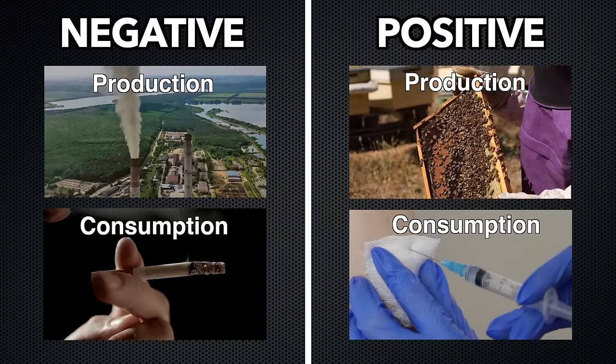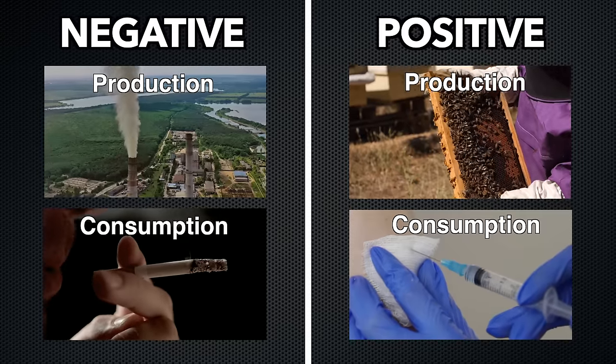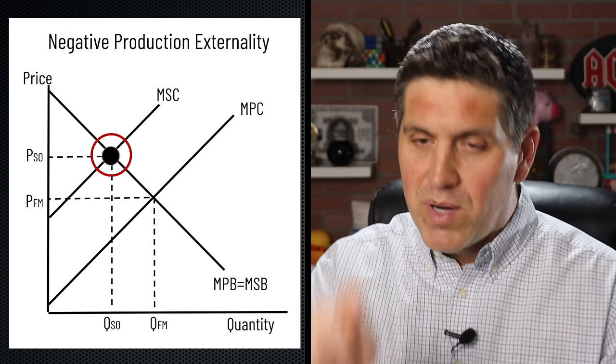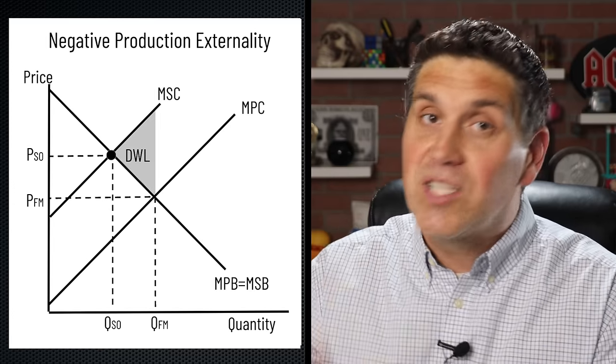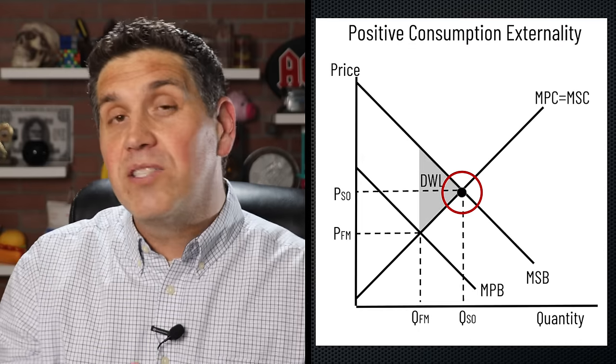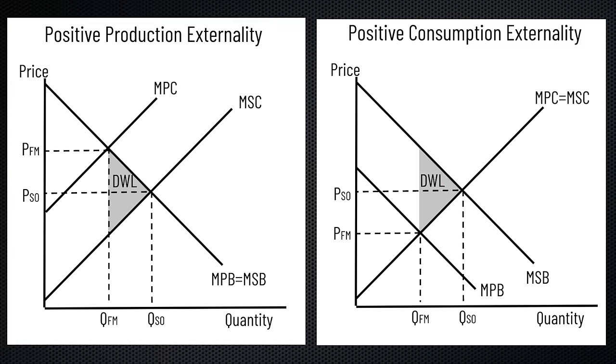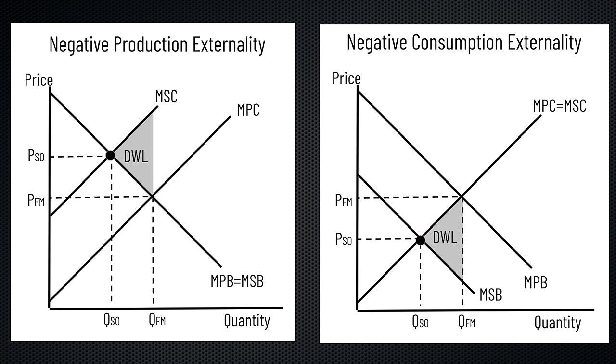Two positive externalities and two negative externalities. But I said there were three rules and I've only given you two. The third one is how to find dead weight loss. Dead weight loss always points to socially optimal. Put a dot where the marginal social benefit hits the marginal social cost — the arrow of dead weight loss will point right to that. If you're underproducing, dead weight loss points to the right. For positive externalities, dead weight loss always points right. For negative externalities, it always points left — regardless of which graph you're looking at.